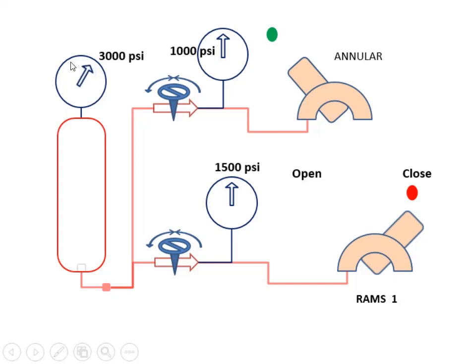Third, the accumulator bottle pressure will decrease from 3000 PSI. If the pressure is decreasing below the charging pump setup pressure, then the charging pump will be activated, and the pressure of the bottle will be back to 3000 PSI again. For any RAMs or HCR activation, the hydraulic pressure on annular BOP will not change